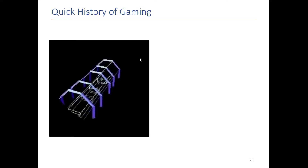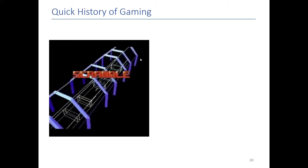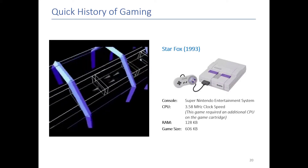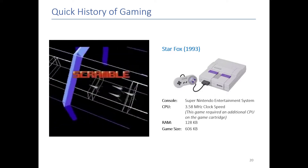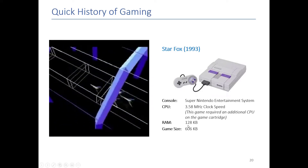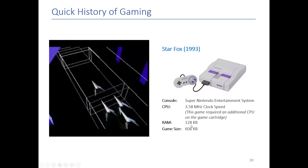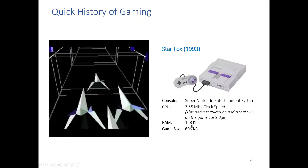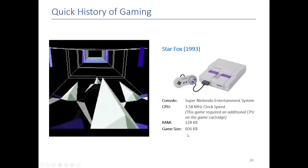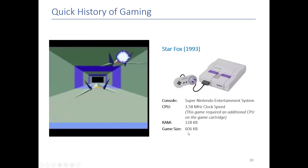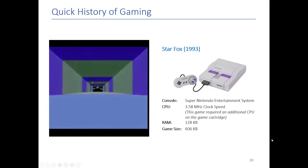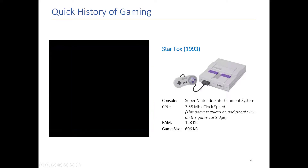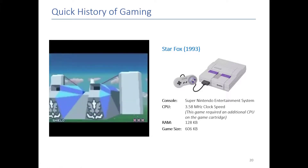Here, for those who have never seen it, this is Star Fox for the Super Nintendo — just a few years after the NES came out. Now we're talking about 128 kilobytes of RAM, so roughly 64 times more RAM on that computer, and the game size went from roughly 80 kilobytes to 600 kilobytes. It's interesting to see how much it increased.